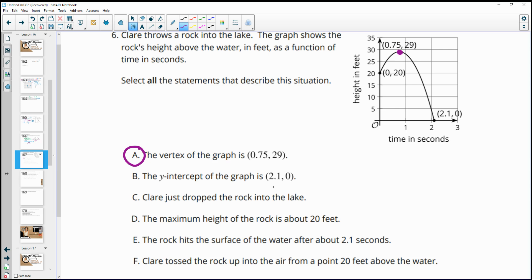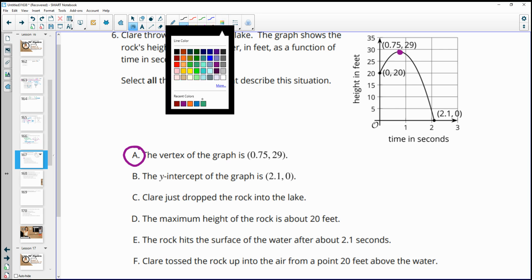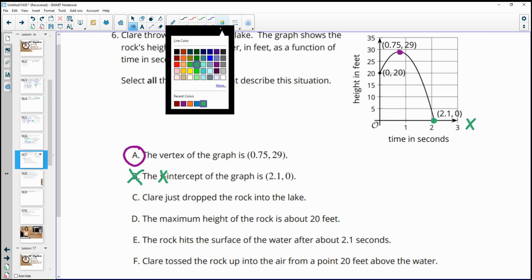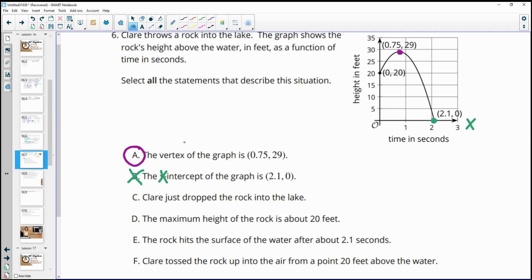The y-intercept of the graph is (2.1, 0). That's false because this is the x-axis. So this is the x-intercept, not the y-intercept. Claire dropped the rock into the lake. So here's where it started and the rock is going up to start. If she dropped it, it would just be like this. So this one is false.